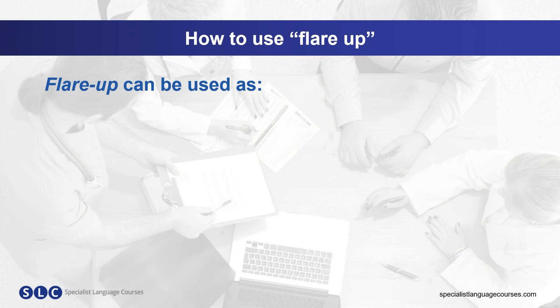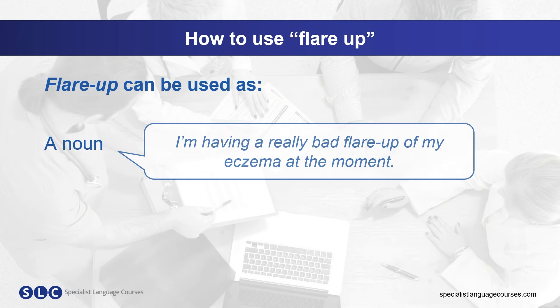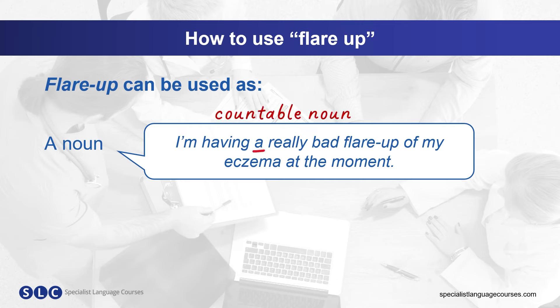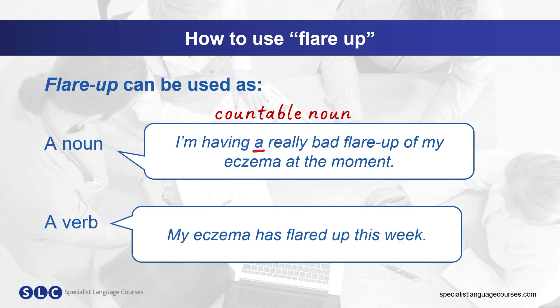Flare up can be used as a noun. For example: 'I'm having a really bad flare-up of my eczema at the moment.' It is a countable noun, so it takes the article when singular. Flare up can also be used as a verb. For example: 'My eczema has flared up this week.' We use a hyphen for the noun form, but not for the verb.